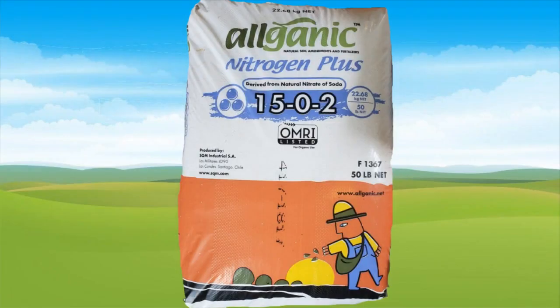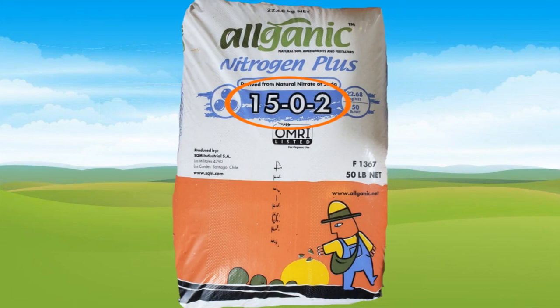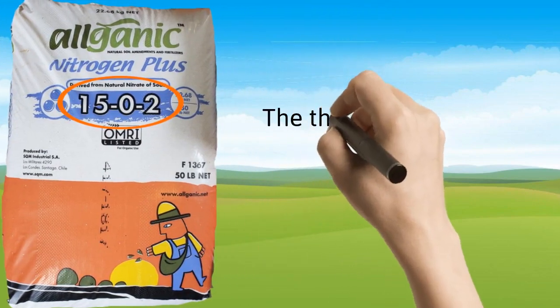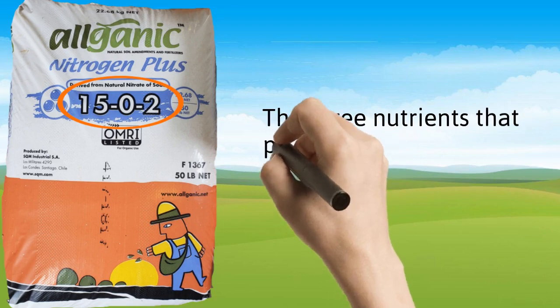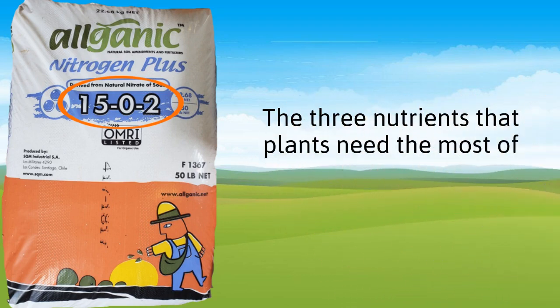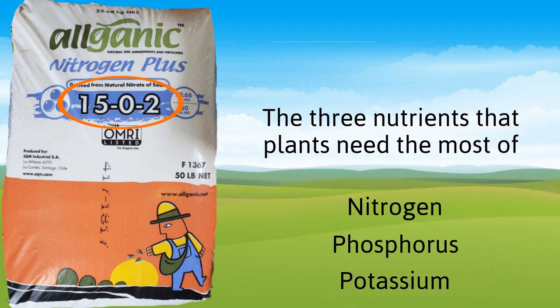Fertilizers have different amounts of nutrients in them. For example, on this bag we see the numbers 15, 0, and 2. These numbers tell us the amounts of the three nutrients that plants need the most of: nitrogen, phosphorus, and potassium.